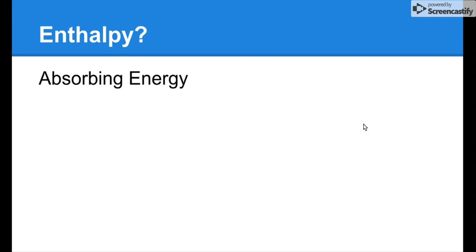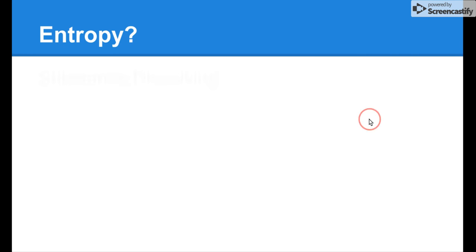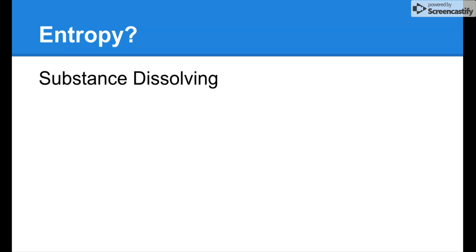Next question: enthalpy. If something is absorbing energy, what would be the sign and direction of enthalpy? If something is absorbing energy, that means energy is going into the reaction — it's a positive delta H. Next question: entropy for a substance that's dissolving. It is a positive delta S, because when a substance dissolves, it goes from a solid to an aqueous substance, breaking apart into multiple pieces — more disorder.